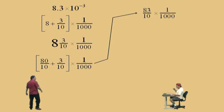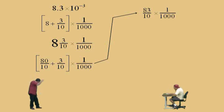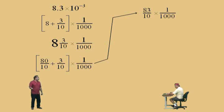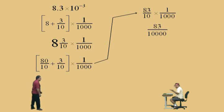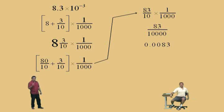Now, eighty-three tenths times one over a thousand: multiply straight across top and bottom to get eighty-three over ten thousand. Written as a decimal, eighty-three over ten thousand is 0.0083. That's the fraction multiplication showing exactly why 8.3 times ten to the negative three equals 0.0083.